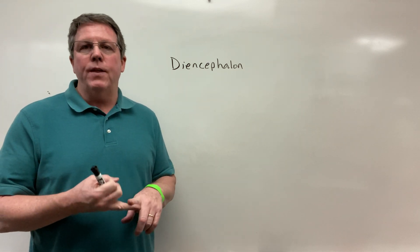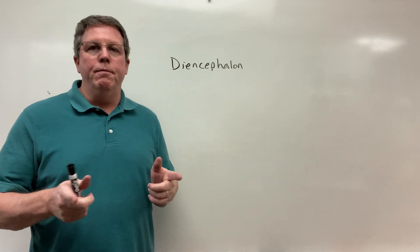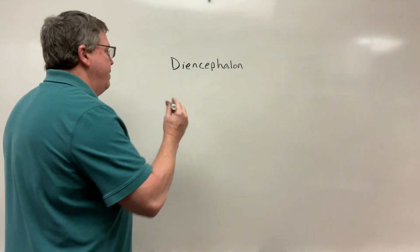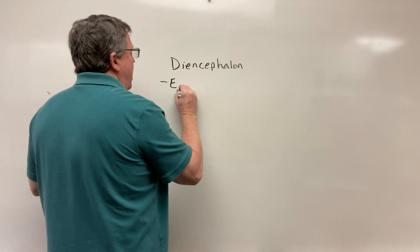It's made up of the epithalamus, the thalamus, the hypothalamus, and the subthalamus. So let's go ahead and list those.